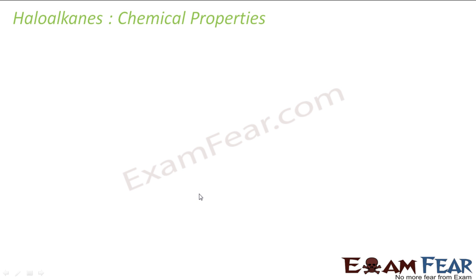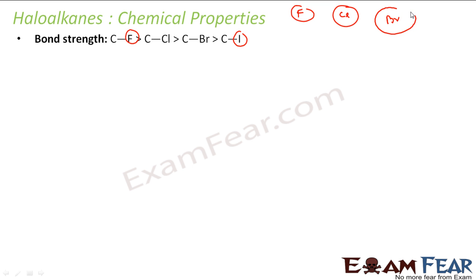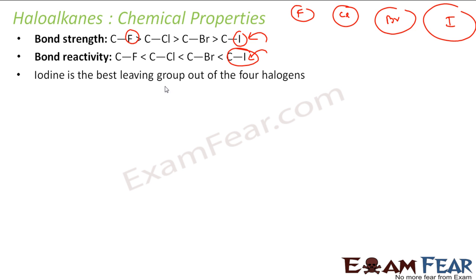We start with the chemical properties of Haloalkanes. First, some basic concepts. The bond strength of C-F is maximum and C-I is least. Why? Because fluorine is the smallest in size, and as you go down the group — fluorine, chlorine, bromine, iodine — the size increases. So the bond strength becomes weaker, meaning C-I is more reactive. Weakest bond strength means the most reactive, so iodine can easily leave. Iodine is the best leaving group among all four halogens.